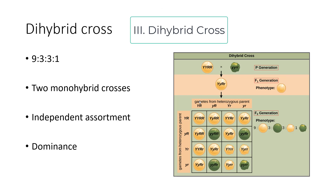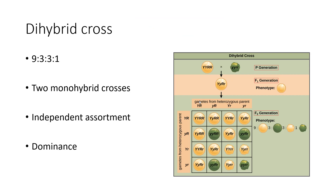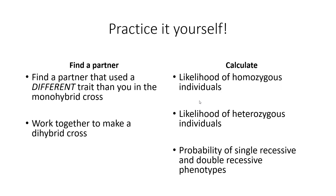Finally, let's look at a dihybrid cross, which we'll practice in class. It's essentially two monohybrid crosses assorting independently, with dominance still present. The phenotype ratio is 9:3:3:1 — nine with both dominant traits, three with one dominant and one recessive, three with one recessive and one dominant, and one with both recessive traits. In our example, yellow pea is dominant to green and round is dominant to wrinkled. Each gamete must obey the law of segregation. We'll be practicing this ourselves, but you're watching this video for review.